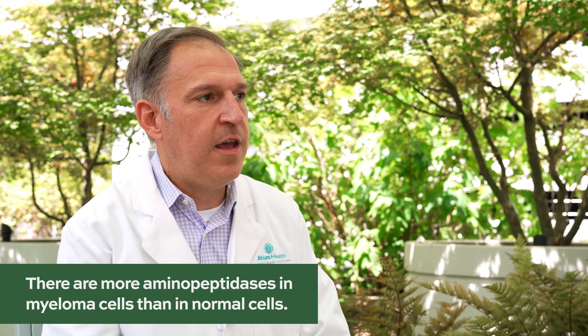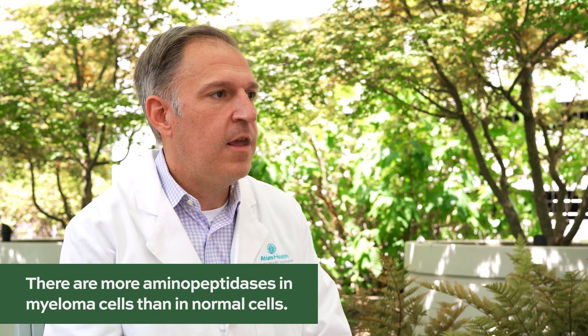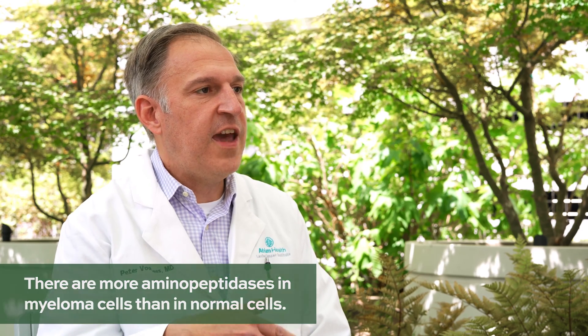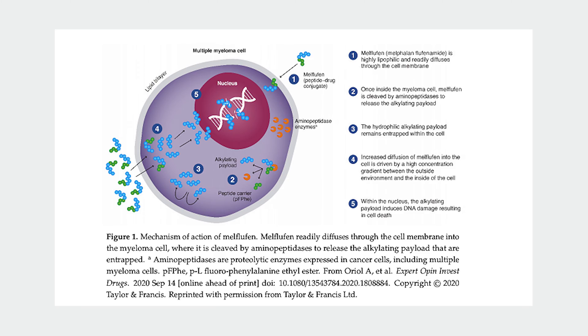There are aminopeptidases in normal tissues of the body, but there is a higher proportion of aminopeptidases in cancer tissues, including in multiple myeloma. So the idea is that you're targeting the alkylator — the melphalan payload — to the myeloma by virtue of higher aminopeptidases inside those myeloma cells that clip off that peptide, liberate and trap the active alkylating agent inside the myeloma cell, where it goes into the nucleus, mediates DNA damage, and causes the cell to die.